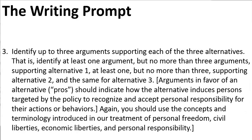Number three: Identify up to three arguments supporting each of the three alternatives. That is, identify at least one argument but no more than three arguments supporting alternative one, at least one but no more than three supporting alternative two, and the same for alternative three. Arguments in favor of an alternative — pros — should indicate how the alternative induces persons targeted by the policy to recognize and accept personal responsibility for their actions or behaviors. Again, you should use the concepts and terminology introduced in our treatment of personal freedom, civil liberties, economic liberties, and personal responsibility.